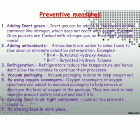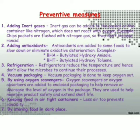Preventive measures — what we can do to prevent rancidity. Number one is adding inert gases; number two, adding antioxidants; number three, refrigeration; number four, vacuum packaging; number five, using oxygen scavengers; number six, keeping food in airtight containers; and number seven, storing food in dark places. Inert gases — basically nitrogen — are used, which don't react with oxygen. For example, chips packaging is flushed with nitrogen gas to prevent reaction with oxygen. Antioxidants like BHA and BHT slow down oxidative deterioration of food items.